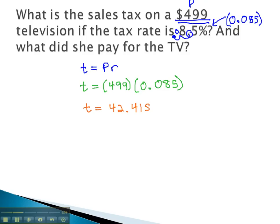Of course, in real life, you're not gonna pay $42.415. That needs to be rounded to the nearest penny. So we will say the tax on this television is going to be $42.42.